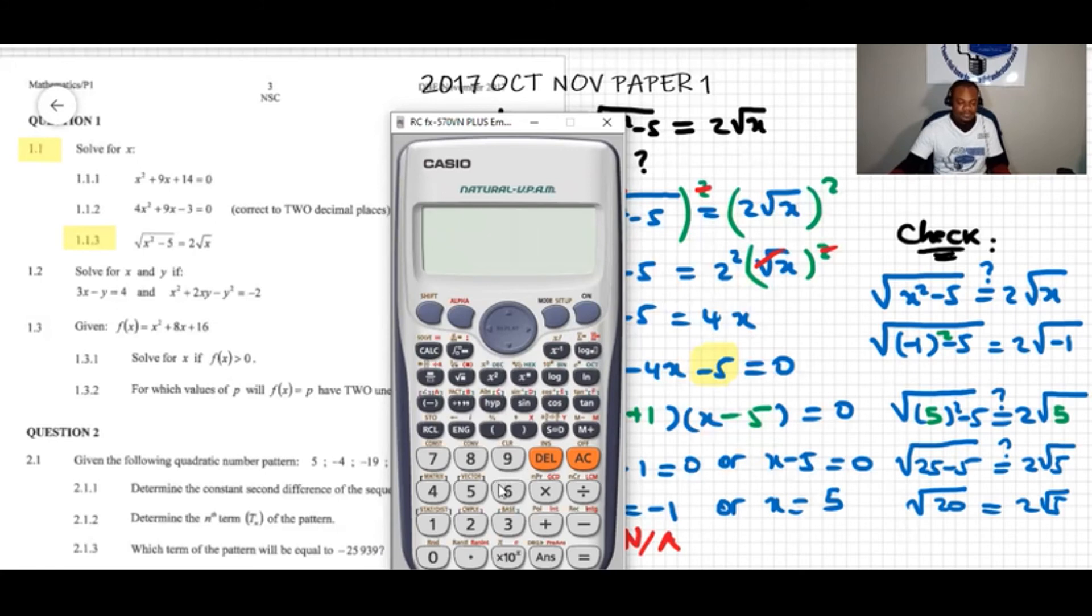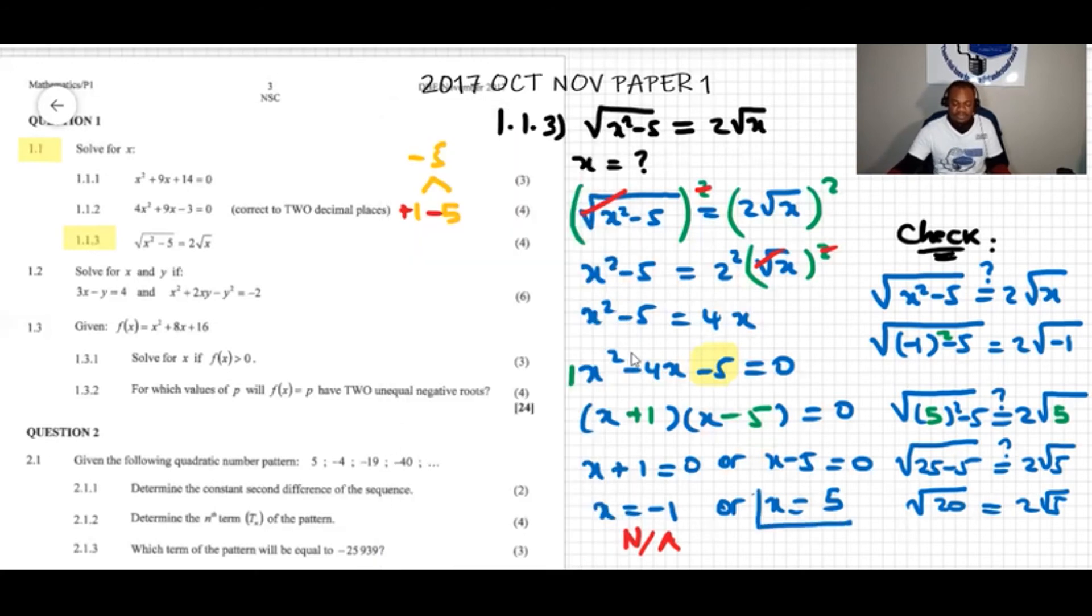You can press the calculator. Square root of 20, that equals 2 root 5. So this is correct. So this is the only valid answer. Thank you.